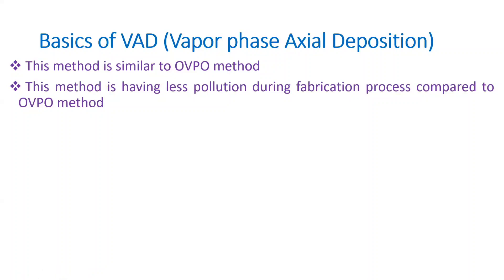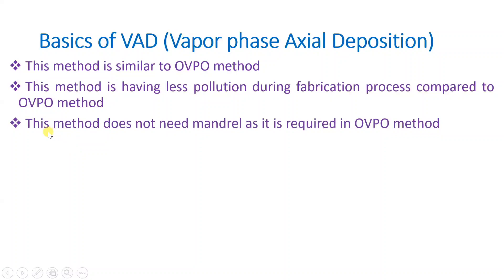In VAD, we have particles in gaseous form initially, and we use them to form optical fiber with less pollution. This method does not need a mandrel as required in OVPO. In OVPO, the mandrel creates a hole in the fiber before the drawing process, so here we don't need that removal step — this is one advantage of the Vapor Phase Axial Deposition method.